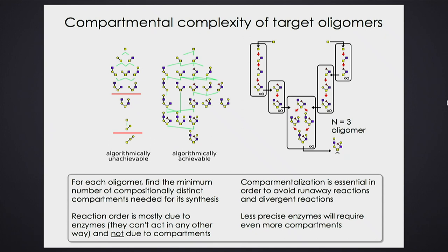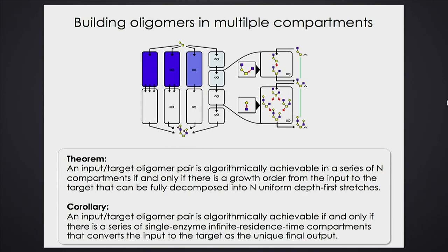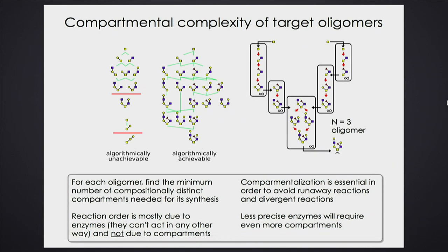Here's an example: a green edge means there is a single-enzyme compartment that converts this input to this target at infinite time. So each green edge is one compartment. I can write down the entire set of intermediate states going from the input to the output and connect any pair that can be done by a single enzyme. Note this long arrow — that system adds two monomers; since it's the infinite time limit and there are two places the enzyme can act, it acts in both places.